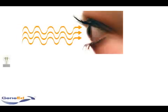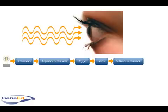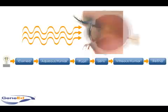Light enters the eye through the cornea, subsequently traveling through the aqueous humor, pupil, lens, and vitreous humor, before reaching the retina at the back of the eye.